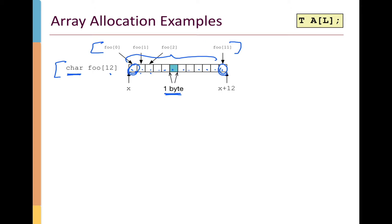Using array notation is convenient, but we can also refer to these elements as pointers. If we have a pointer to the beginning of foo — here called x — that also refers to the 0th element of the array. A pointer is just the address of the 0th element. If we want to refer to a location one beyond the end of the array, we can add the array size to the original pointer, so x plus 12 refers to the byte one past the end.